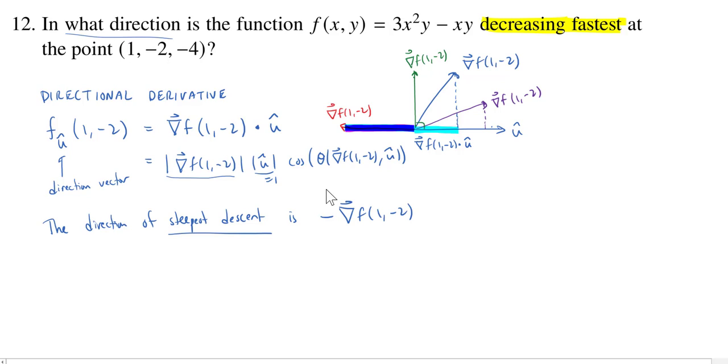So we want this cosine to be as small as possible, meaning we want it to be a negative number with as large an absolute value as possible. That's going to happen when the cosine is negative one, which means we need this angle to be 180 degrees. That'll make the cosine equal to negative one. So again, we want the unit vector to be pointing 180 degrees away from the gradient vector.